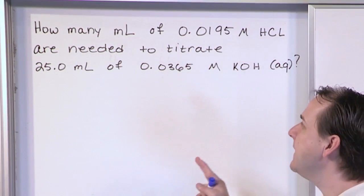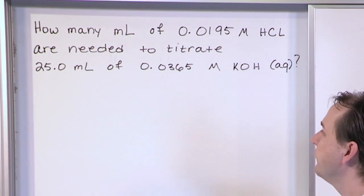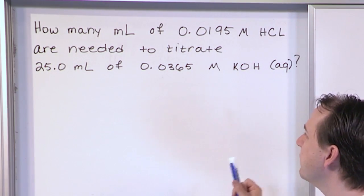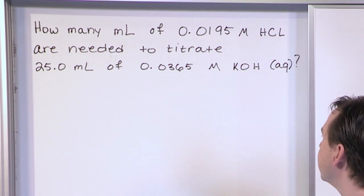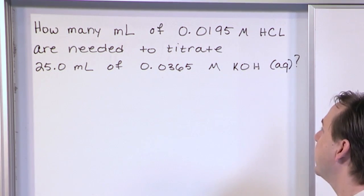And it says, how many milliliters of 0.0195 molar hydrochloric acid are needed to titrate 25 milliliters of 0.0365 molar potassium hydroxide. And that's, of course, an aqueous solution just like the hydrochloric acid is always an aqueous solution.